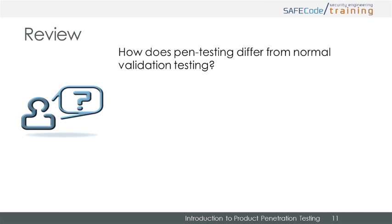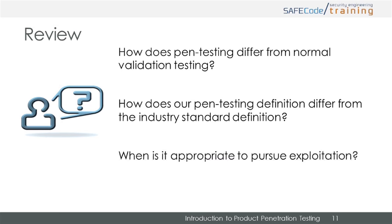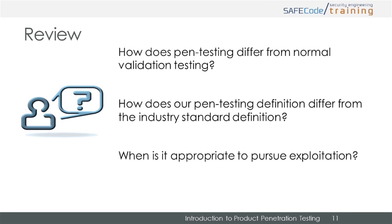Now let's review. How does penetration testing differ from normal validation testing? Validation tends to focus on ensuring proper target functionality, while penetration testing focuses on breaking that functionality by any means possible, including the use of non-plan of record elements, undefined behavior, and implementation errors. Our penetration testing definition emphasizes finding security bugs and de-emphasizes exploitation. Investing resources into creating an exploit may make sense when you need to prove to stakeholders the existence, impact, or severity of the bug, or to demonstrate security acumen or justify additional security resource investment.